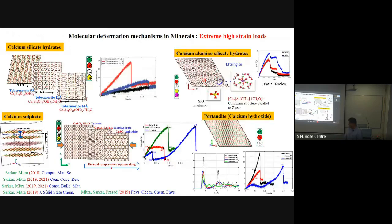We have also done work on minerals, which is applicable to geophysics. For example, calcium sulfate — which is gypsum — has calcium sulfate layers alternating with water layers that hydrate each other and form metal-ligand bonds. Heating to around 300°C removes the water layer, converting it to anhydrite, whose mechanical and thermal properties differ significantly from gypsum. We investigated the role of this interlayer water in the thermomechanical response of the mineral.